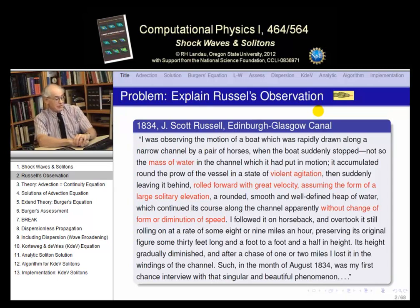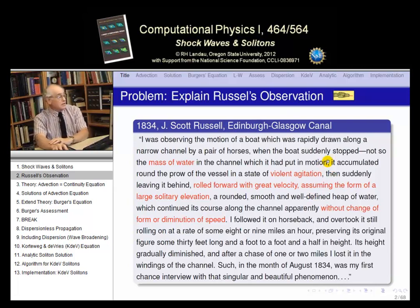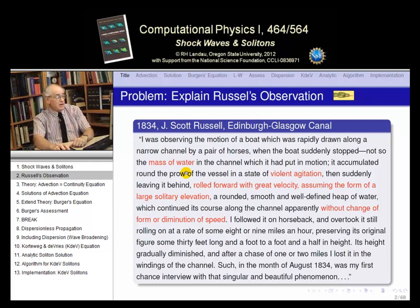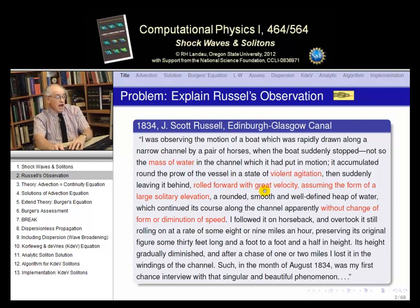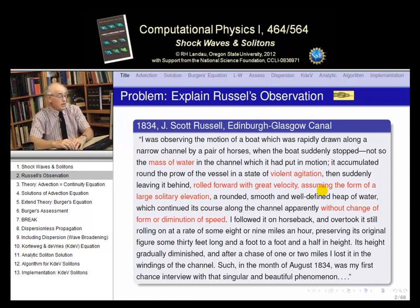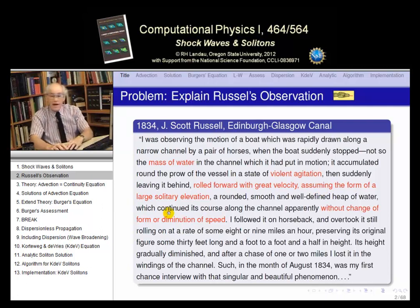This quote shows you that scientists don't write the way they used to. What it shows us — highlighted in red — are the basic features of solitons which Russell observed very well. He observed a mass of water: not a general wave everywhere, but a finite bunch of water that forms these solitary waves. The water starts in violent agitation, rolls forward with great velocity, assumes the form of a single large elevation — a spike — that moves along forever without changing speed, eventually losing shape only after a very long time.